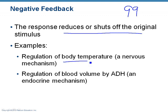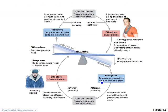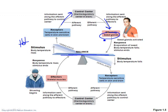Body temperature, blood volume, blood pressure, and blood sugar levels are all negative feedback. Let's use temperature: you're getting hot. Receptors in your skin signal the brain. The brain sends information to the sweat glands. The sweat glands sweat — that water comes to the surface of your skin, evaporates, and you cool down. Now your body temperature is dropping, which shuts off the stimulus — it's the opposite of hot, so that signal shuts down.